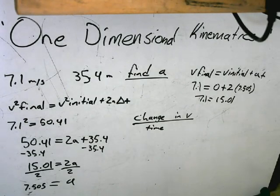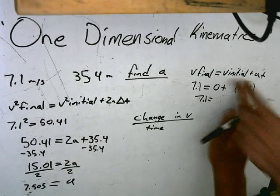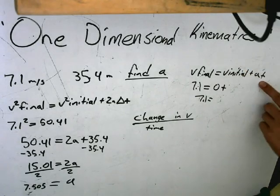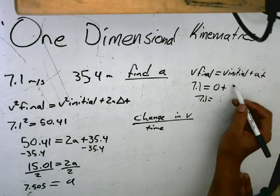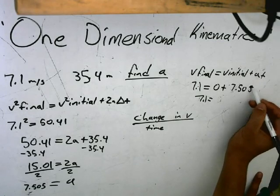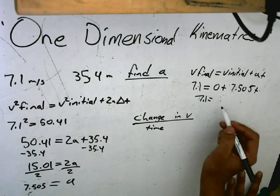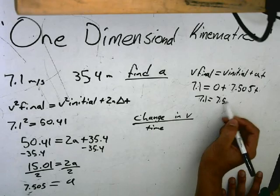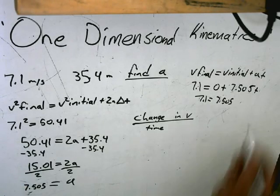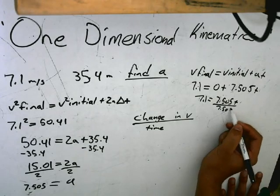So we take 7.1 equals 0 plus 7.505 times t. This equals 7.1 equals 7.505 times t, divided by 7.505 to both sides, which will get an answer of 0.946.